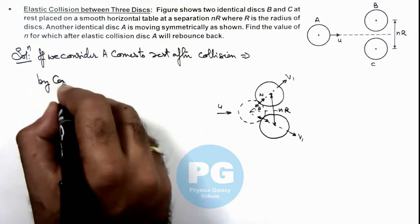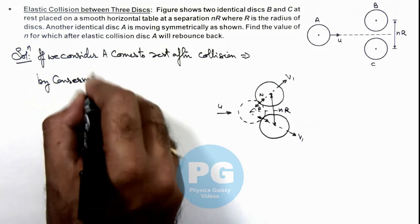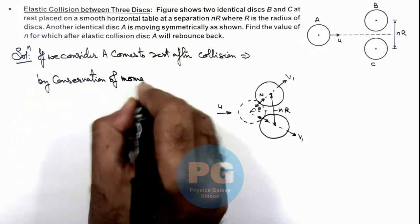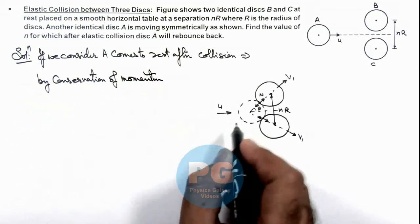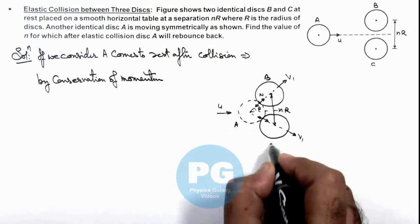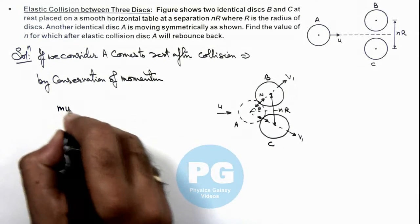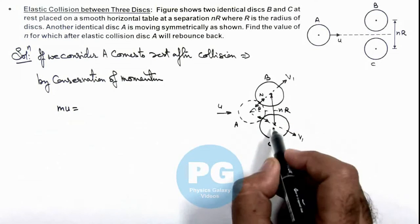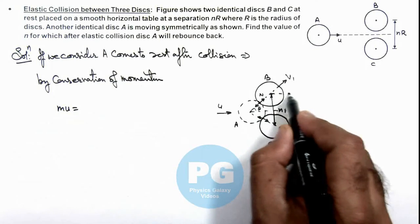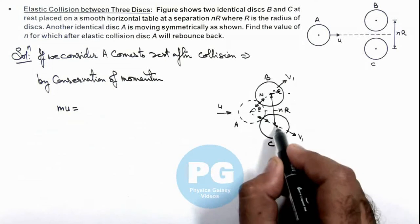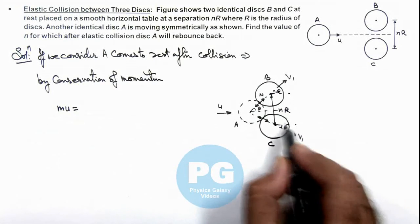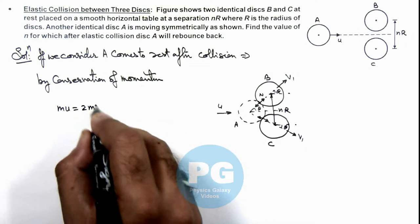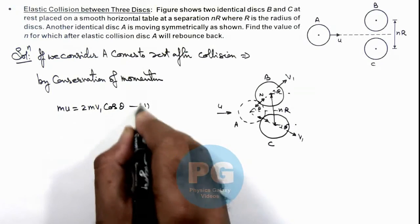By conservation of momentum, the initial momentum of disc A was mu. So we can write mu is equal to the final momentum in horizontal direction for both of these discs, which will be v1 cos theta and v1 cos theta components. So this can be written as 2m v1 cos theta. Say this is our first equation.